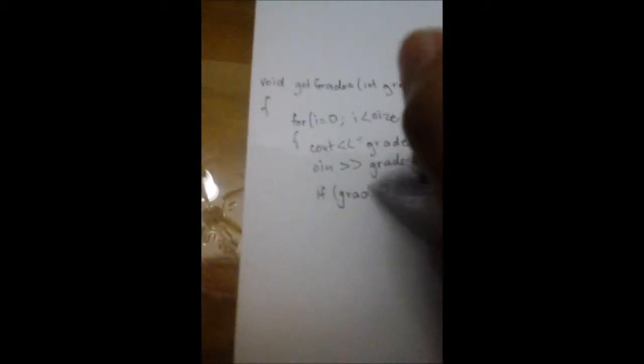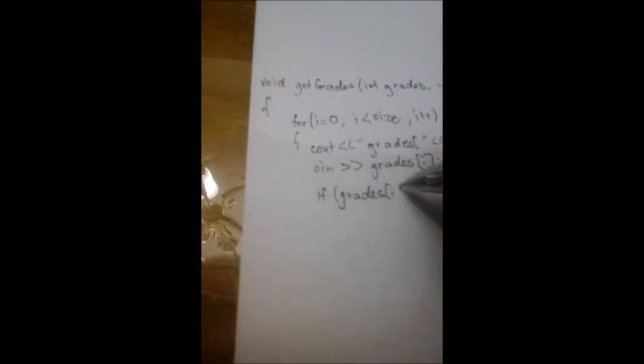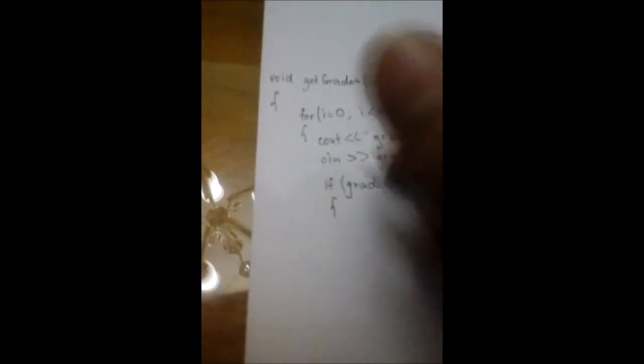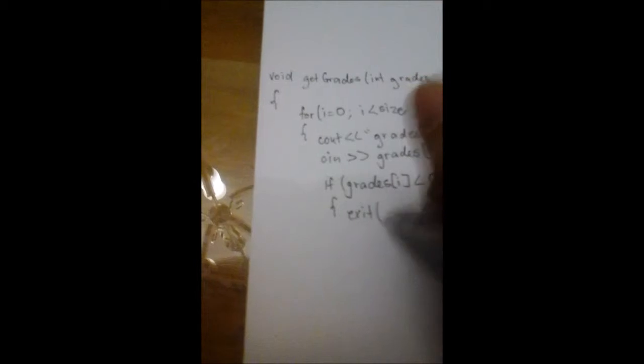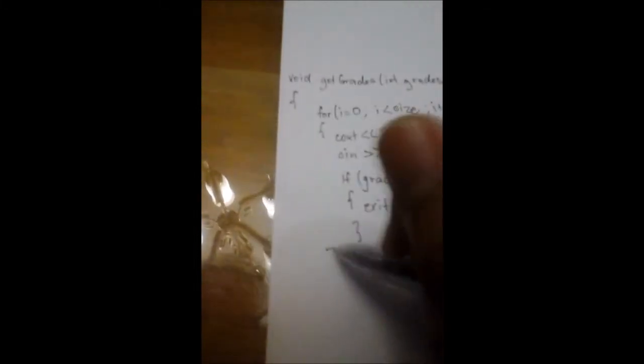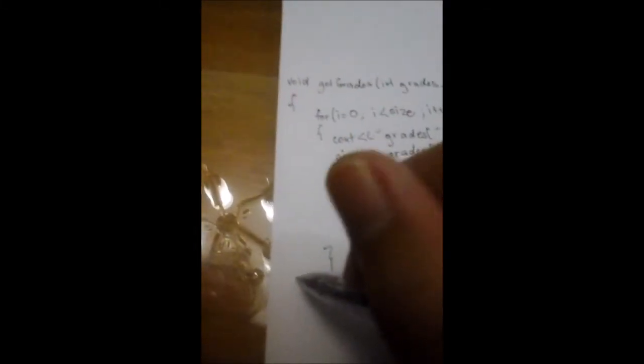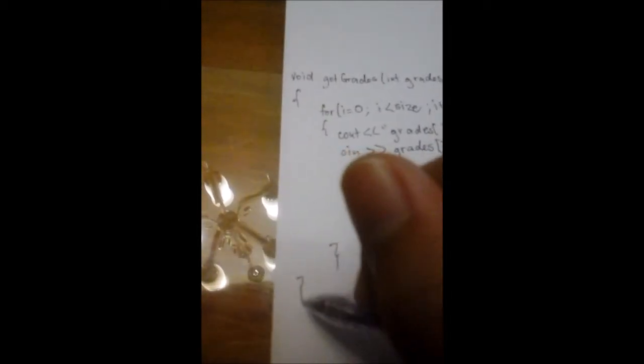So the condition also states if the user inputs a negative number, the program terminates. So, in this we will use an if statement. So, inside the for loop statement still is an if statement. Then, if the grades, the inputted grades is less than zero, open curly brace. So, you exit. So, that's the code for exit. Then, you close it. So, that's the end of our for loop. And this is the end of our function.